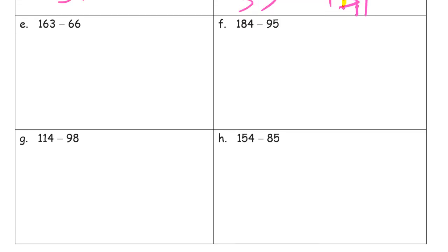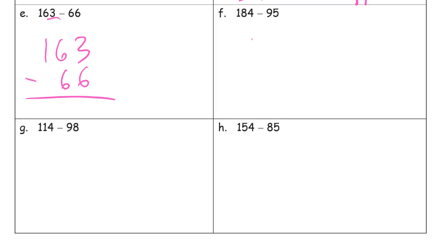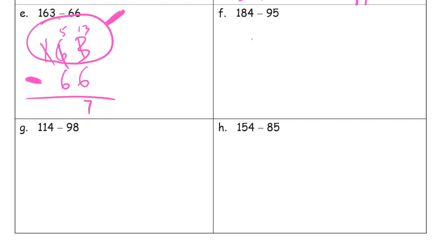Going ahead with all vertical now. We have our minuend with lots of room at the top. This is what we're subtracting: 6 ones and 6 tens. I have 3 ones — can't subtract 6 ones, so I unbundle a 10. I'll have 5 tens left, but 13 ones now. 13 minus 6 is 7 ones. Then 5 tens minus 6 tens — can't do that, so I unbundle this hundred. Now I'll have 15 tens. 15 minus 6 is 9. Answer: 97.